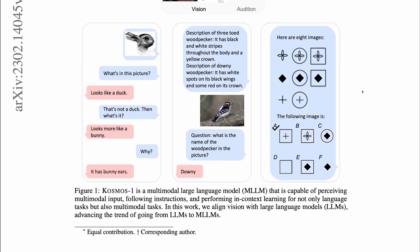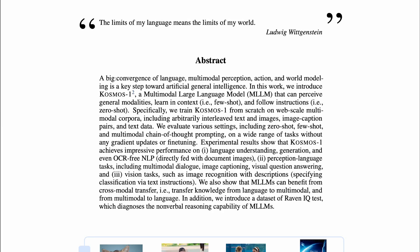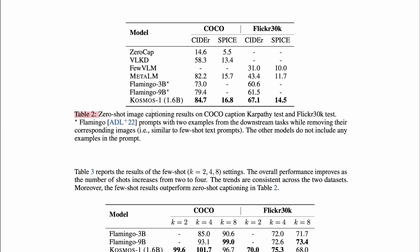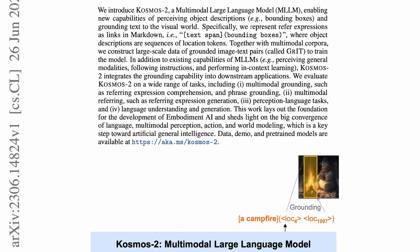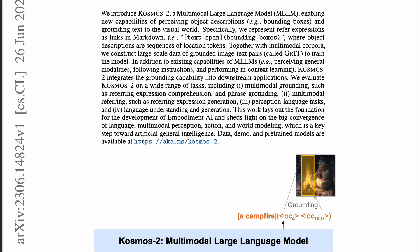They had a full first page figure, then a quote from Wittgenstein, and then the abstract. Strong. It showed solid zero-shot image captioning results, as well as good zero-shot visual question answering performance. Jumping back to Cosmos 2, the way that the authors add the ability to point to objects in the input and output is to represent referring expressions as links in markdown — square brackets containing a text span and parentheses containing bounding boxes — where object descriptions are sequences of location tokens.